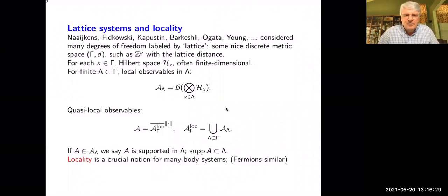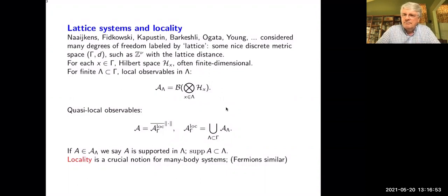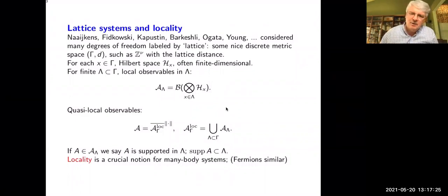When we say that A is supported in lambda, we mean that A is in one of these local algebras. One could define the support as the smallest lambda for which this holds. As Peter also stressed, in the study of physical properties of many-body systems, this locality structure is really very crucial. In the study of topological phases and classification of gapped ground state phases, it has proved to be something essential. As Lukasz pointed out, anyons are the localized excitations that are not produced from the vacuum by a local operator — so this notion of locality is central to all of these discussions.